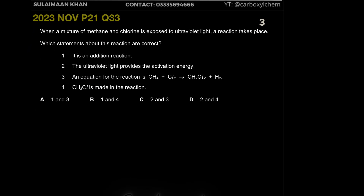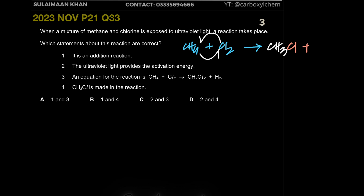Moving on — when a mixture of methane and chlorine is exposed to ultraviolet light, a substitution reaction takes place. Methane CH4 reacts with Cl2: one chlorine atom substitutes a hydrogen in methane, and the displaced hydrogen reacts with chlorine to give HCl. So you get CH3Cl plus HCl. This is a chain reaction — CH3Cl can further react with Cl2 to give CH2Cl2 plus HCl.